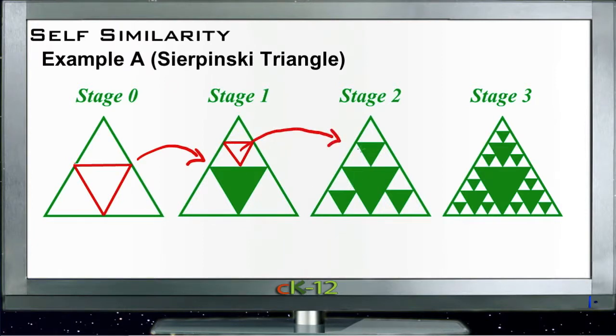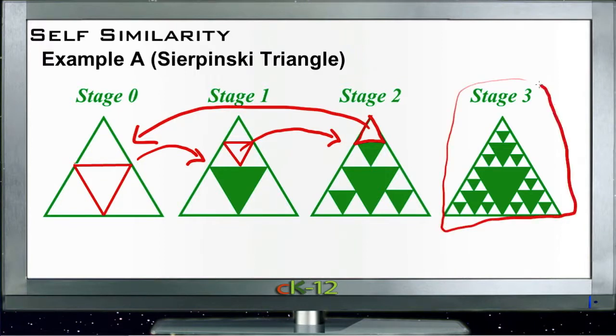So you could zoom in on any one of these triangles and start the whole process over. We could take this triangle right here, for instance, and start all back over, back over here at stage zero, and it would continue to end up being the same figure by the time you got in three stages as the one we started with originally.